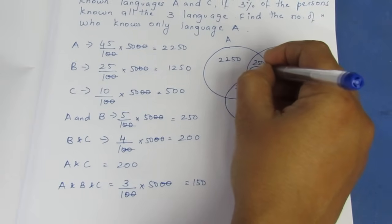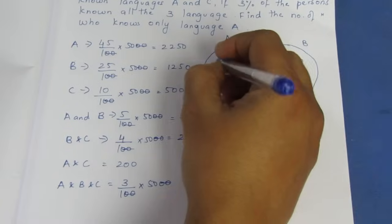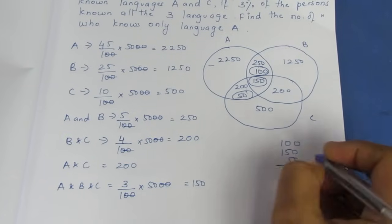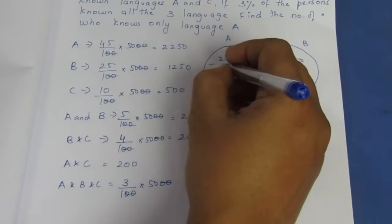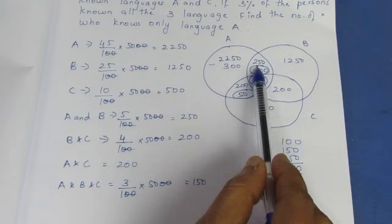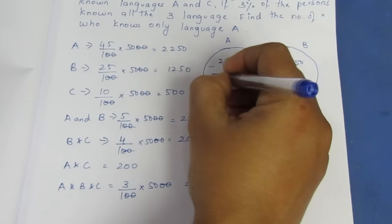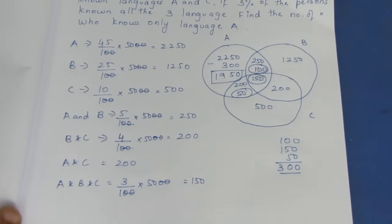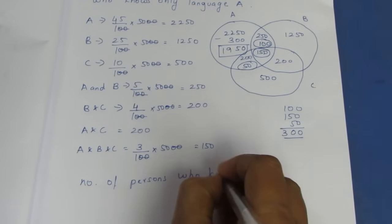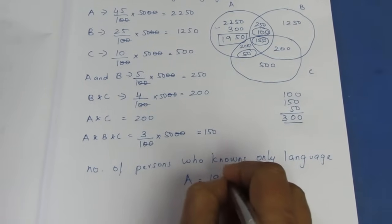So, we add and then minus. What we do is minus this round. Round values: 100, 150, 50. Add and minus gives 300. Minus 300 — very simple. The number of persons who know only language A is equal to 1950.